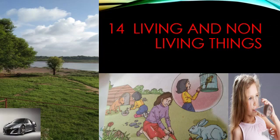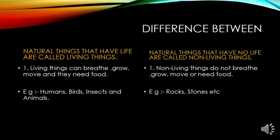One by one, we will learn the differences between living things and non-living things. Remember, both living and non-living things are natural things because they are made by God. Natural things that have life are called living things. We are all made by God. Animals, plants, humans — we have life. We breathe, we grow, we need food to eat and we need air. So we are known as living things.